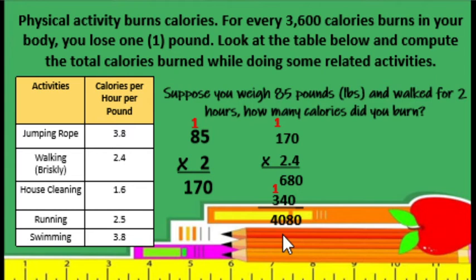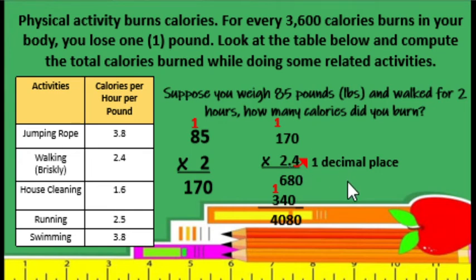Then third step: count the number of decimal places in the factors. So we have 1 decimal place. And then last step: place the decimal point in the product. The decimal place in the product is equal to the total number of decimal places in the factors. We only have one decimal place, so we place one decimal place in the product. So the answer is 408. So 408 calories were burned.